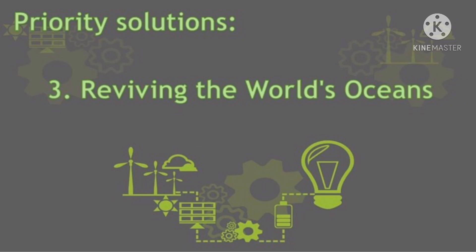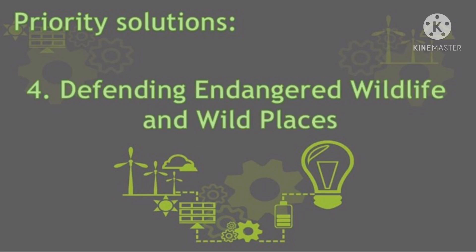Priority solution number three: Reviving the world's oceans. The world's oceans are on the brink of ecological collapse. We can restore marine vitality by ending overfishing, creating marine protected areas, and improving the way we govern our oceans. Priority solution number four: Defending endangered wildlife and wild places. The destruction of our last remaining wild lands means the loss of vast stores of biological diversity, critical regulators of global climate, and irreplaceable sanctuaries.